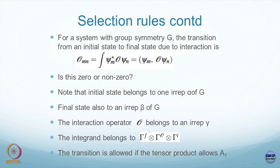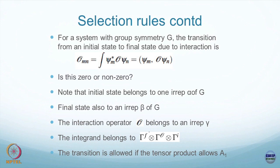The integrand involves the tensor product of the EREP associated with the final state, the EREP associated with the initial state, and the EREP associated with the observable. The transition is allowed if the tensor product contains A1. In C4V, for example, E cross E can give A1 plus A2 plus something — at least A1 must appear in the tensor product for the result to be non-zero.